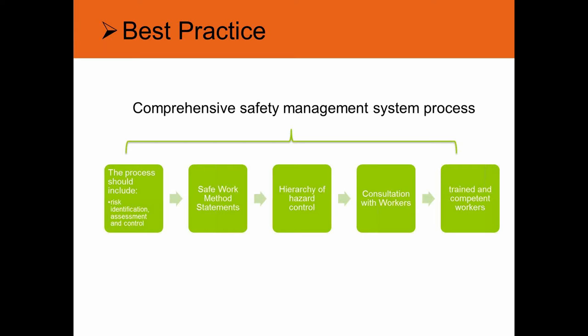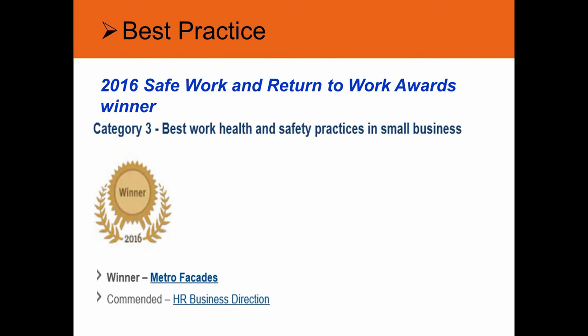An example of best practice in reality: this slide shows a Category 3 winner of the 2016 Safe Work and Return to Work Awards — a company called Metro Facades, which specialises in installing building facades, particularly glass curtain walling. Management worked with engineers and staff for a number of years to create a 'launch pad' — a system to install glass curtain walling from inside a building using miniature cranes. The system eliminates the need for workers to be exposed to falls from heights and reduces the need for workers to hold, restrain, position and manoeuvre panels, which can weigh up to 400 kilos each.